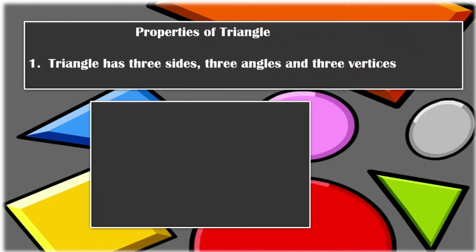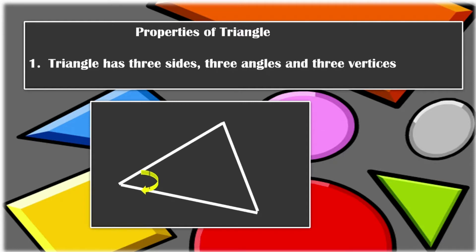Next, the properties of a triangle. The first property: a triangle has three sides, three angles, and three vertices. As you can see, there are three sides, three angles, and three vertices.